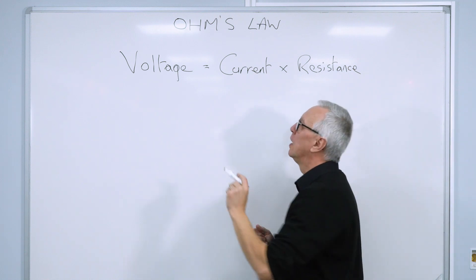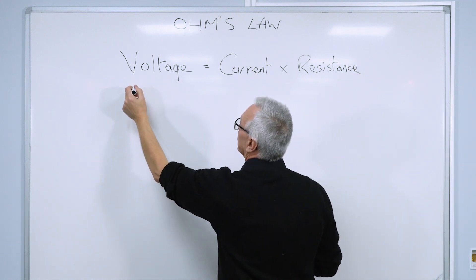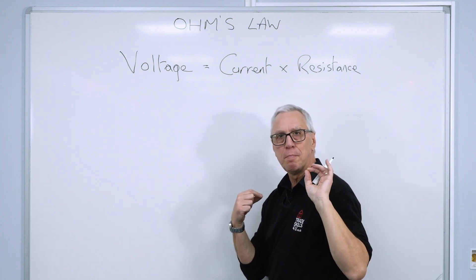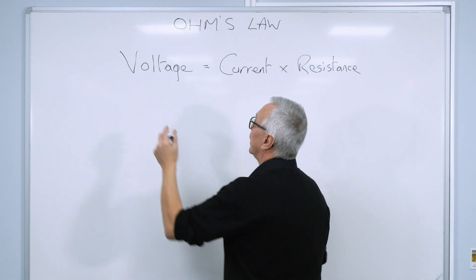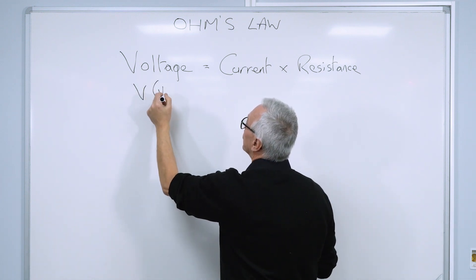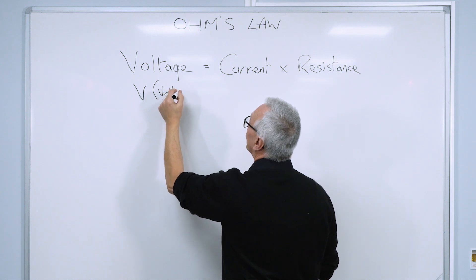Let's just put some units in here. Voltage is, in a mathematical equation, given the symbol V. And on your meter, it will show as V. So V is volts. That's the unit of voltage.